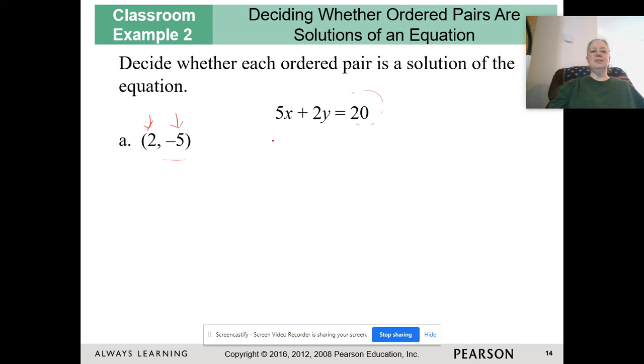For the ordered pair (2, -5), we're going to replace our x with 2. As a reminder, anytime you substitute a number in, you are going to put it in parentheses. So we have 5(2) plus 2(-5) equals 20. Order of operations says we multiply first. I'm going to multiply the 5 and the 2 and get 10, and multiply the 2 and the negative 5 and get negative 10.